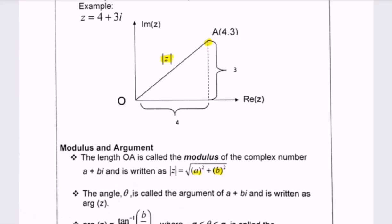Next is to find the angle, where we have the argument. The angle theta is called the argument of a plus bi, and it's written as argument of z.